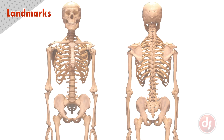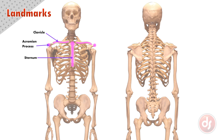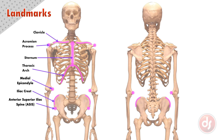Now that we know the parts of the skeleton, let's look at which of them can be seen on the surface. Nearly the whole clavicle can be seen on the surface along with a flat point for the acromion process. The sternum appears as a flat area running between the chest muscles. The curve of the thoracic arch is visible from the surface. The medial epicondyle of the humerus sticks out and creates a gentle point we can see. The iliac crest and the anterior superior iliac spine can be seen on the front of the pelvis. The great trochanter usually appears as a gentle depression as the gluteal muscles attach around it. The pubis symphysis appears mostly on the female form as the bottom point of the pelvis from the front.